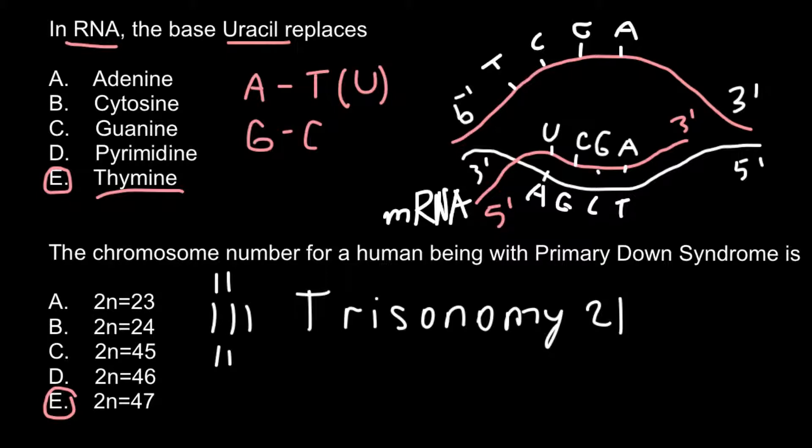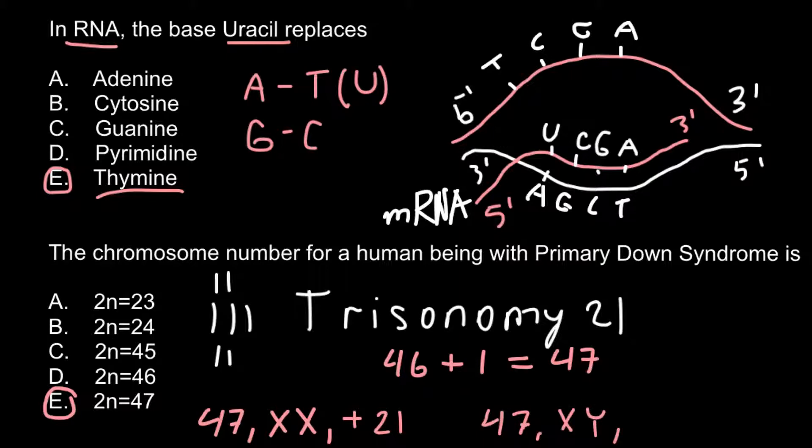Because the normal number of chromosomes would be 46, 23 pairs, plus 1 extra chromosome, the total number of chromosomes would be 47. Geneticists notate this condition as 47, then they specify the sex of the person. For example, if it is female, this is going to be XX, and then they specify which chromosome is present here in 3 copies, so this is going to be plus 21. If it is a male, the notation would be 47, and then sex XY, and then plus 21.